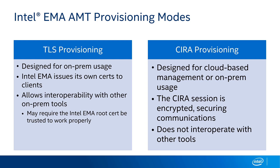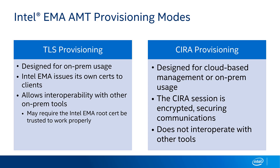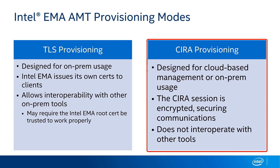Next I'd like to talk about the provisioning modes for Active Management Technology inside Intel Endpoint Management Assistant. We support two modes today: TLS provisioning and CIRA provisioning. TLS provisioning is designed primarily for on-prem usage models. A great feature of Intel EMA is its built-in certificate authority, so you don't have to worry about certificates — EMA issues them to clients automatically. It also leaves local management ports open, allowing easy interoperation with other on-premises third-party tools that support Intel AMT. CIRA provisioning, rather than leaving management ports open, has Intel AMT open a VPN-like tunnel from the chipset directly to your Intel EMA server, which works great over the internet.